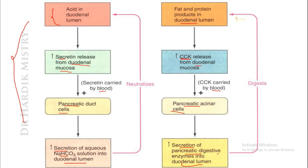Once the pancreatic digestive enzymes are present in the pancreatic juice and released into the small intestine, they act on fat and protein products in the duodenal and small intestinal lumen to digest them. Similarly, once sodium bicarbonate is released in the pancreatic juice into the duodenum or small intestine, it neutralizes the acid in the duodenal lumen. Both hormones have different stimuli and different responses.